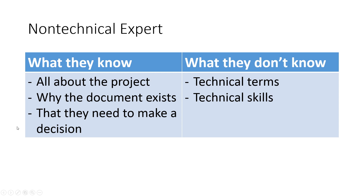Dealing with non-technical experts in your technical writing basically means you have to understand what they know and what they don't. A non-technical expert would know all about the project — they may have even commissioned the report, or might be the CEO of the company. So they understand fully why the document exists and that they need to use it to make a decision. An executive might commission a report on how a new project is progressing. That report might include significant technical detail, but they're not going to read that — they're going to look at your recommendations: what should we do at this stage of the project?